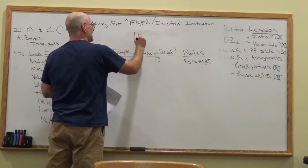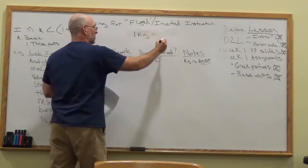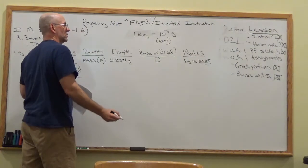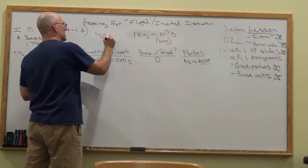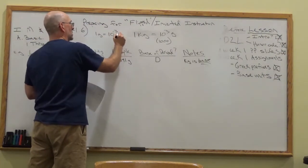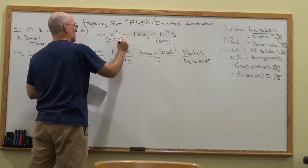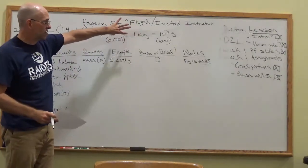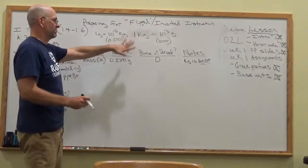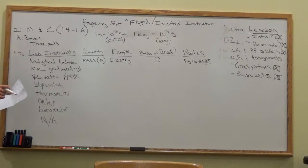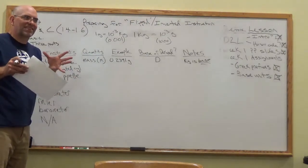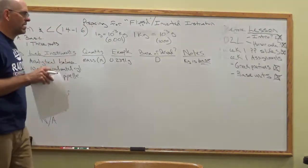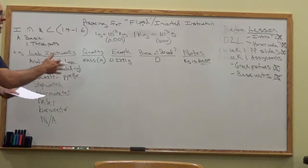Now, grams — is that the base unit? No, actually kilogram is the base unit for mass. So gram is actually a derived unit. The prefix kilo means 10 to the third, so one kilogram equals 1000 grams. As a preview: 0.2391 grams is equivalent to some value in kilograms using that conversion. One kilogram equals 10 to the third grams, or equivalently one gram equals 10 to the negative third kilograms.